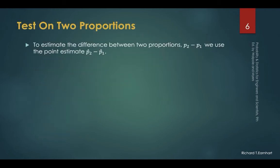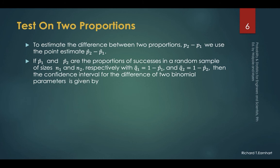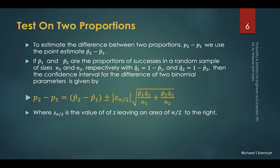For the difference of two proportions, the estimate is the difference between the sample proportions. These are the two proportions of successes, combined with the z value from the degree of confidence. Q1 and Q2 are the complements of P1 and P2, representing the proportions of failures.